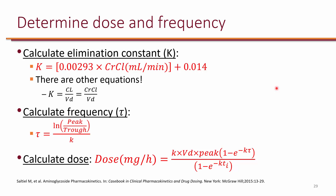Once you figure out what you want to target for your patient, the next step is to calculate the elimination constant K before you can come up with a dose and frequency. This is an estimate from population data, so it won't be exactly the same K as in your patient, but empiric estimation is the best we can do. The equation we use includes creatinine clearance, which gives you K. Once you have K, you use another equation to get tau — tau is frequency — telling you how often to give the dose based on how the patient is able to clear the drug.